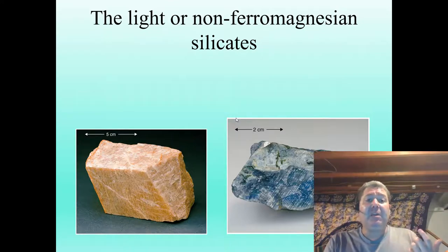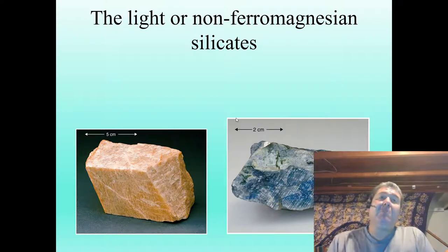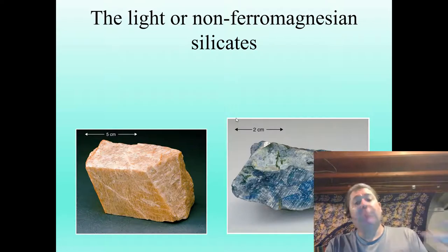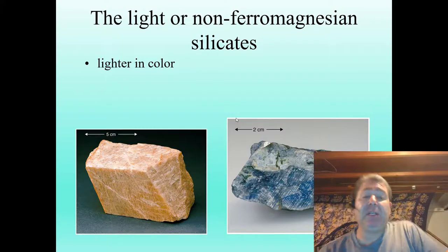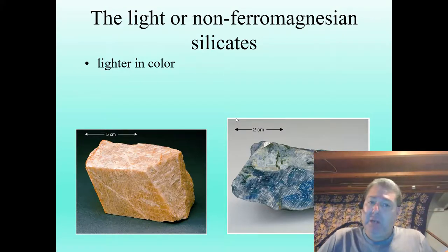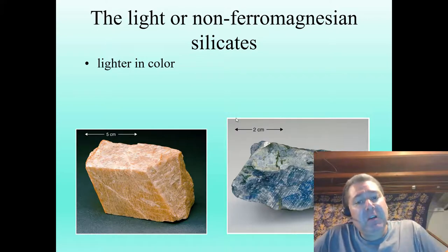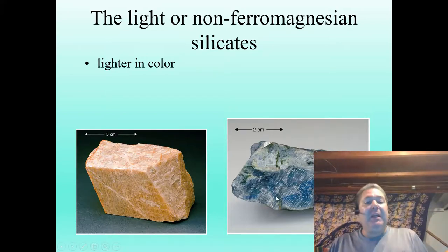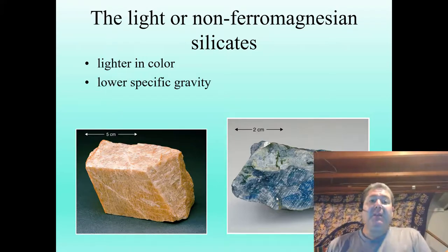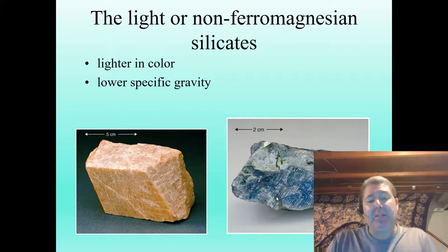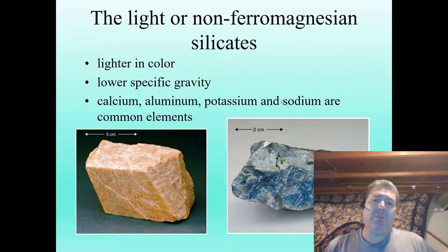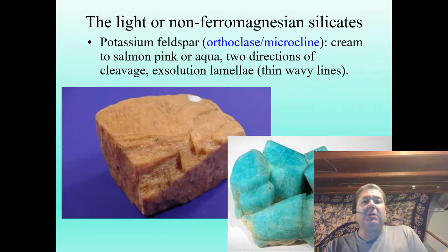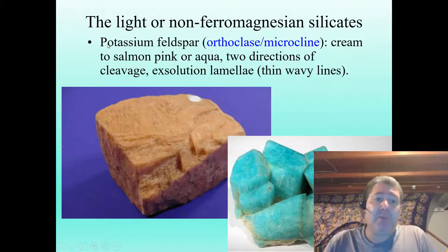The light or non-ferromagnesian silicates tend to be sheet and framework silicates. 'Light' means lighter in color — whites, clears, pinks, reds, oranges, even dark reds and blues. These are lower in specific gravity because they have less iron and magnesium, and generally contain more calcium, aluminum, potassium, or sodium as the metallic bonding agents rather than iron and magnesium.